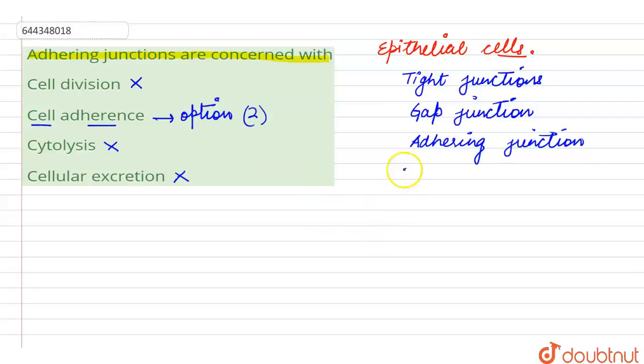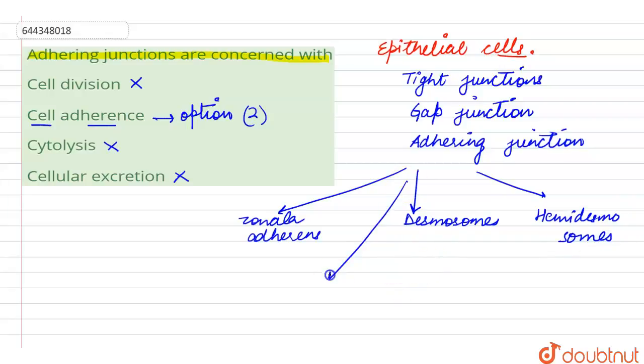Now, these adhering junctions can be of further different types. They can be zonula adherence, desmosomes, hemidesmosomes, intercellular bridges, or interdigitations.